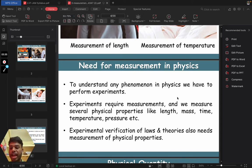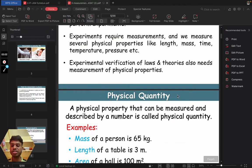As you know that in experiments we require measurements and we measure several physical quantities for that like length, mass, time, temperature, pressure, etc. We measure various kinds of physical quantities in experiment to get the result out of it. For experimental verification of laws and theories also needs measurement of physical properties. Now what is a physical quantity?